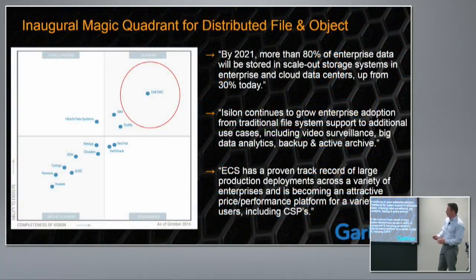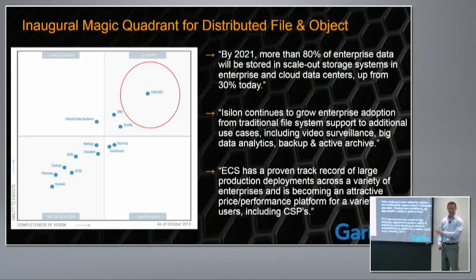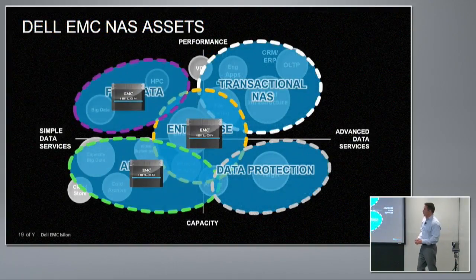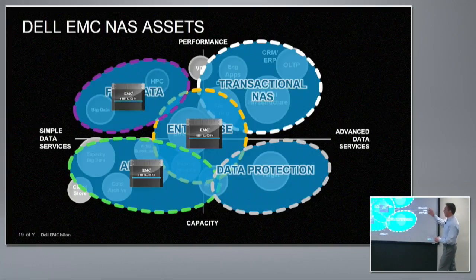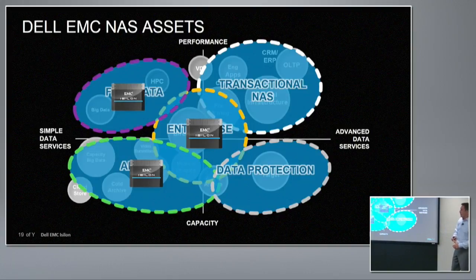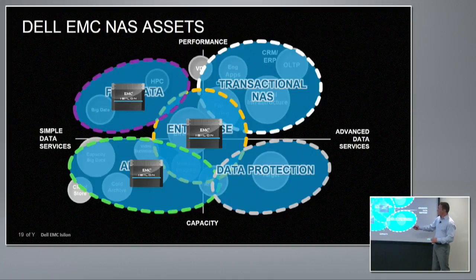We're shown in the Gartner Magic Quadrant as a leader in the file and object space, and I wanted to show how large that gap is compared to competitors — this is from the most recent Gartner file and object report. Thinking of workloads in terms of performance versus capacity and advanced versus simple data services: we're very strong in high-performance compute (genomic sequencing, media streaming, oil and gas seismic interpretation), enterprise file services (home directories, NAS file shares), and archive for long-term preservation. Our business roughly splits equally across each of these areas.